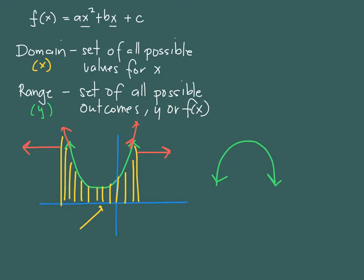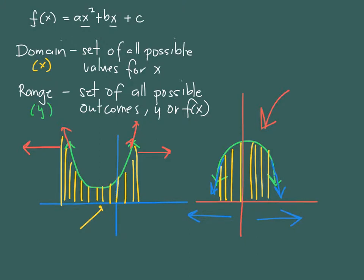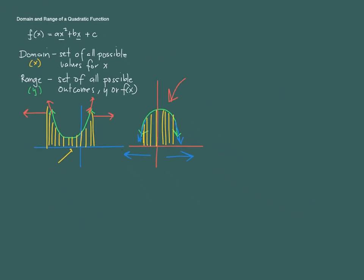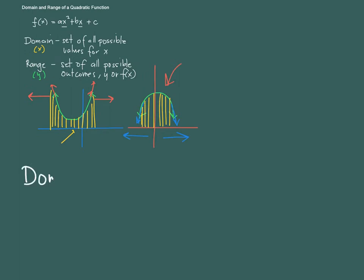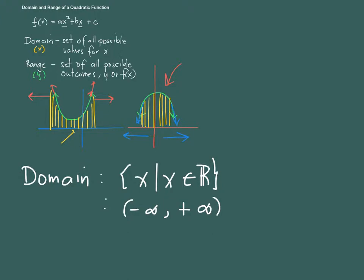Even if the graph is going down, like in the second case, the same observation applies. The graph, although going down, has a direction to the right and a direction to the left, so we cover all x values on the x-axis. Therefore, the set of all possible values for x for a quadratic function is the set of real numbers. We say x such that x is an element of the real numbers, or from negative infinity to positive infinity, or simply all real numbers. This will be the domain of any quadratic function of the form ax squared plus bx plus c.